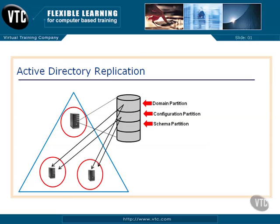Then we have the schema partition. This defines the object classes and their attributes for the entire library. Any time we change an object and add an attribute to a user object, it's changed in the schema partition — and that, too, gets replicated to all the other domain controllers.